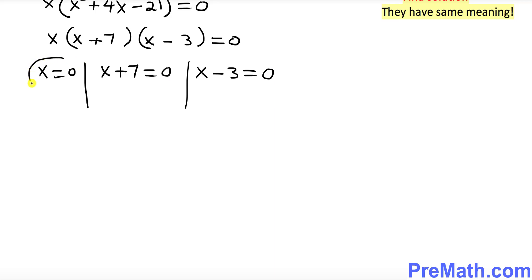So that's our very first solution. And that's going to give us x equal to negative 7. That is another solution. And that's going to give us x equal to 3. That is our third solution. So thus our given solution set is 0, negative 7, and 3. And that is our answer.